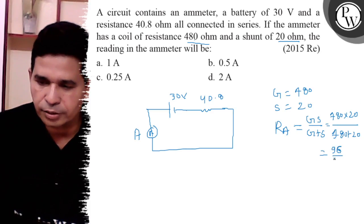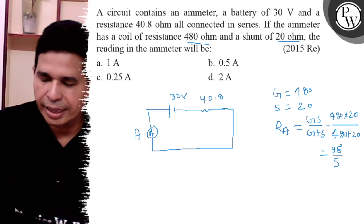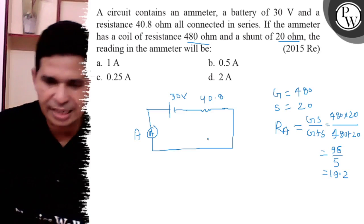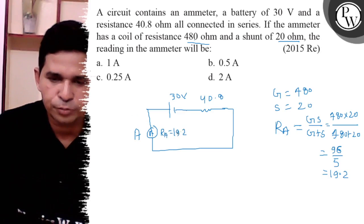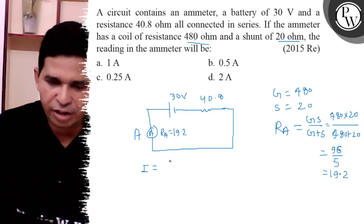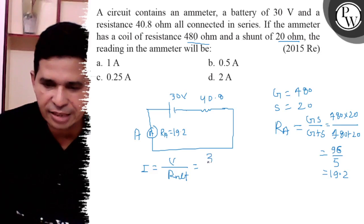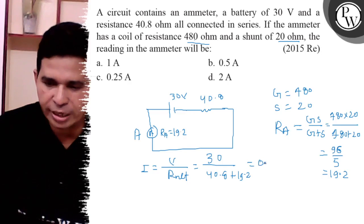That comes to 19.2 ohms — that is the resistance of the ammeter. Now, the current I is the reading of the ammeter: I = Voltage / R_net = 30 / (40.8 + 19.2) = 30 / 60 = 0.5 ampere.